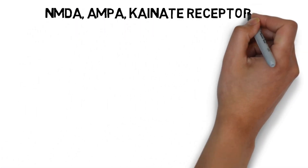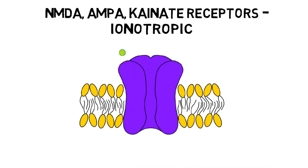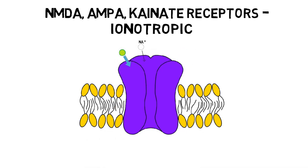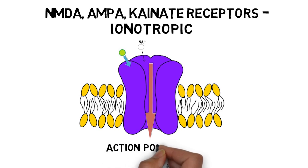Glutamate interacts with several different types of receptors. There are three identified ionotropic glutamate receptors, named for substances that activate them: NMDA, AMPA, and kainate receptors. When activated, all three allow positively charged sodium ions to flow into a postsynaptic neuron, depolarizing the neuron and making it more likely to fire an action potential. NMDA receptors have unique characteristics that make them well-suited to be involved in synaptic plasticity, or synaptic changes that occur in response to experience, which are an important component of learning and memory.